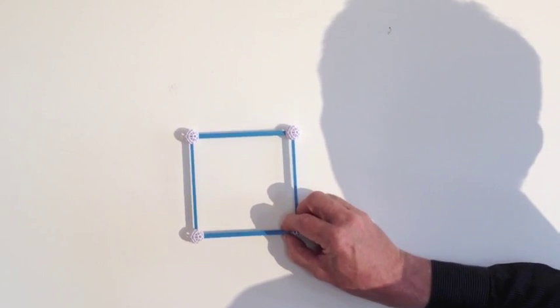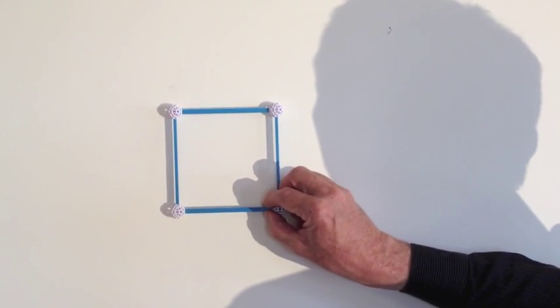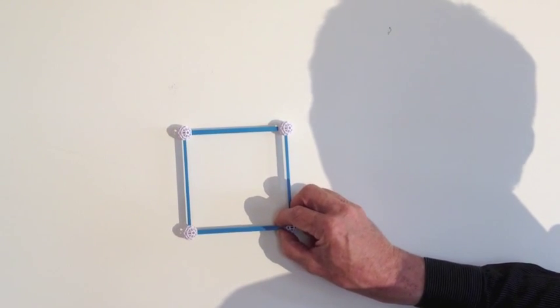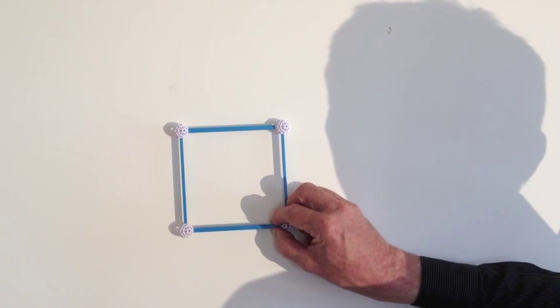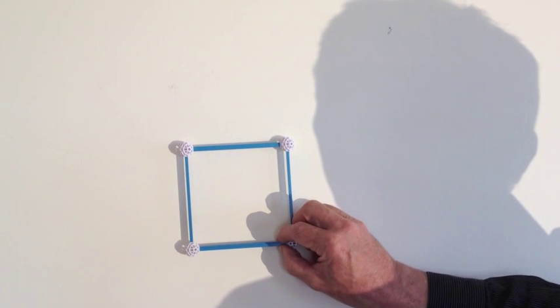And they say, well, you can't do that. There are no other directions. There's only, or no other dimensions. Obviously, there are other directions. But there's only up and down and north-south. There's no such thing as east-west.